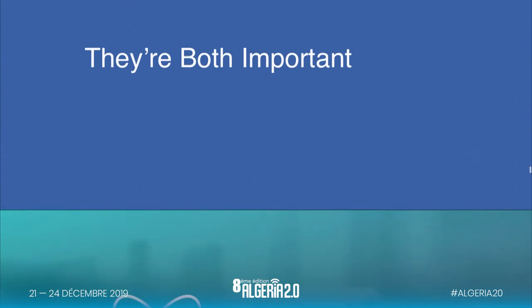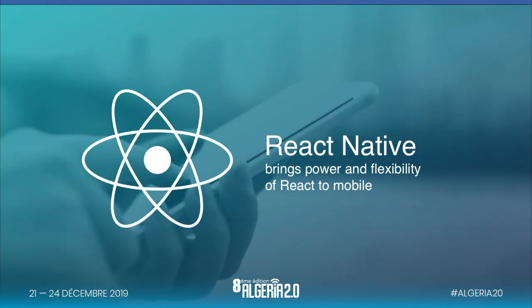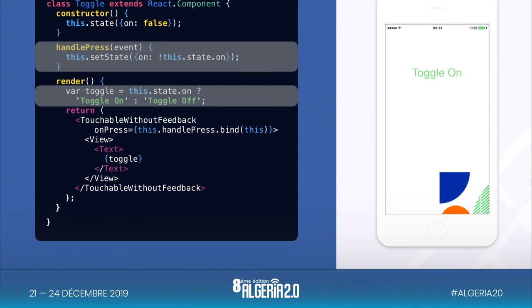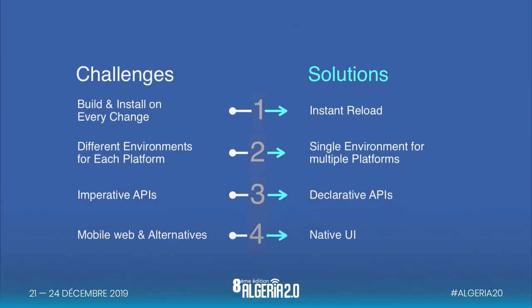This is where React Native comes in as a solution. React Native is another solution to build mobile applications using React technology. Using React Native, we solve the build-and-install problem. There's a beautiful feature called Instant Reload where you can see your changes immediately on the mobile application as you run it. Different environments are also solved — a single environment for multiple platforms, building on Android or iOS, desktop applications, web applications, and more.